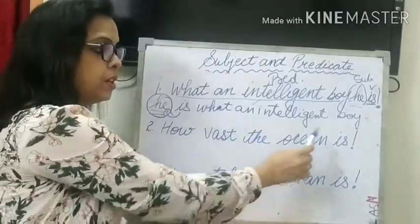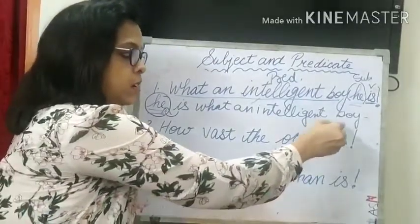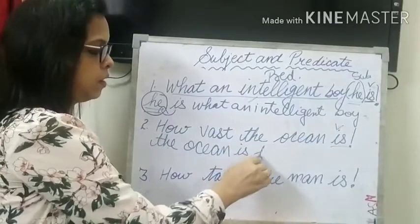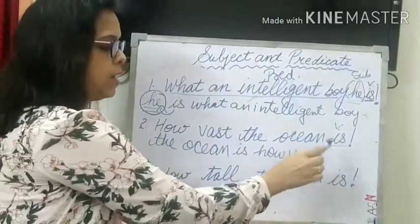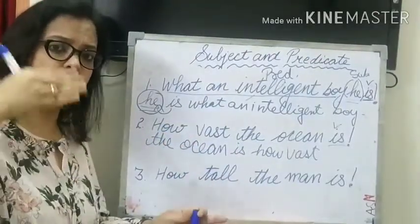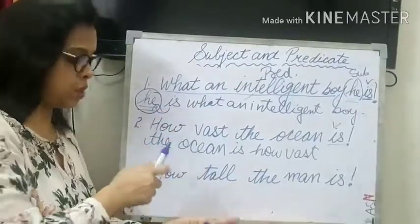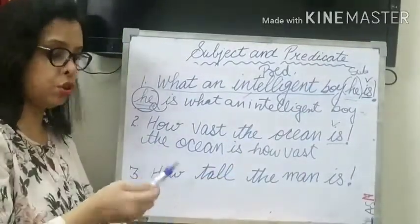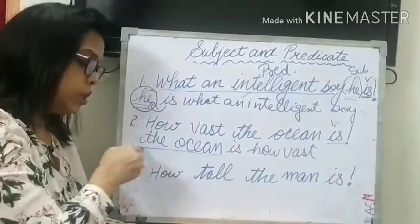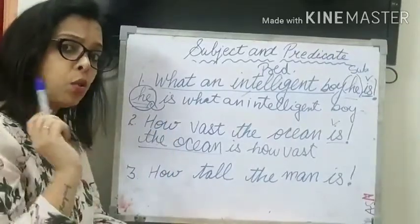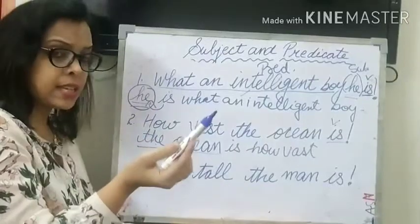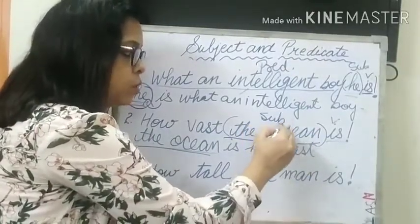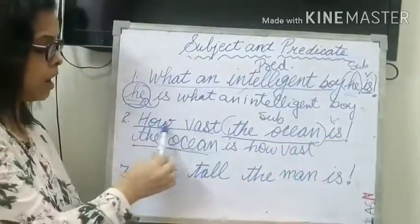Second example: 'How vast the ocean is!' Let's rephrase it. The verb is 'is', so: 'The ocean is how vast.' Now if we put the question — what is how vast? — the answer is 'the ocean is how vast'. So as subject always answers who or what, 'the ocean' is the subject. Here also the subject is coming somewhere in between the predicate — the predicate is 'how vast is'.